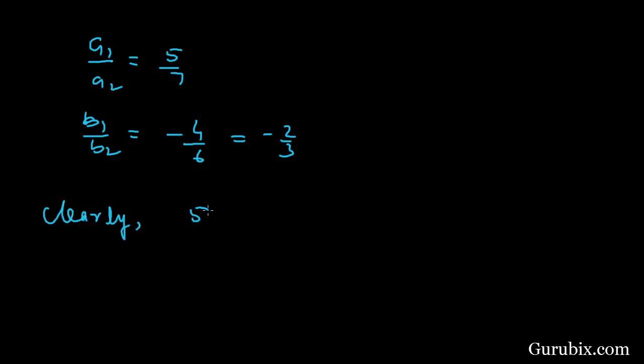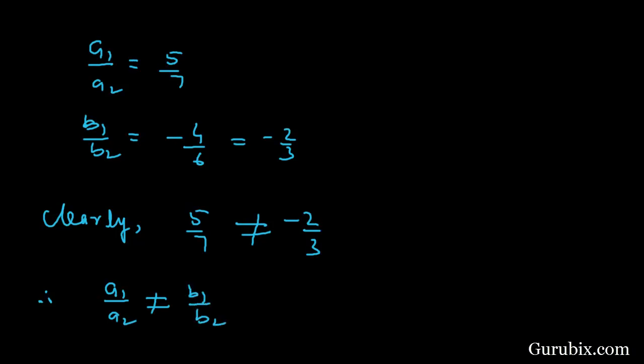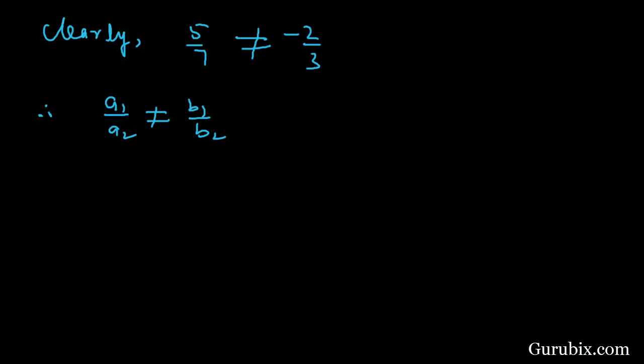Clearly, 5 over 7 is not equal to minus 2 over 3, because any positive number cannot equal a negative number. Therefore, a1 over a2 is not equal to b1 over b2.